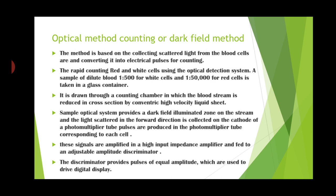A sample of dilute blood — 1 to 500 for white cells and 1 to 50,000 for red cells — is taken in a glass container. These dilution ratios are used for different cell counting. The sample is drawn through a counting chamber in which the bloodstream is reduced in cross-section by a concentric high velocity liquid sheet.